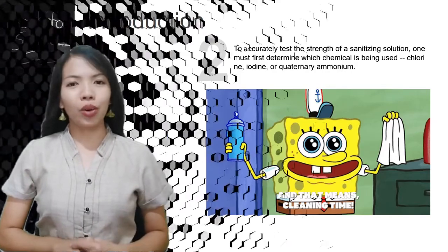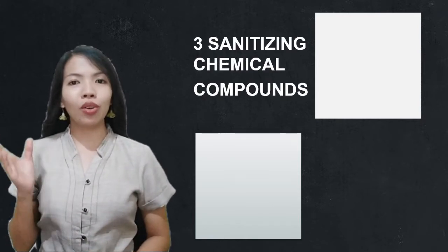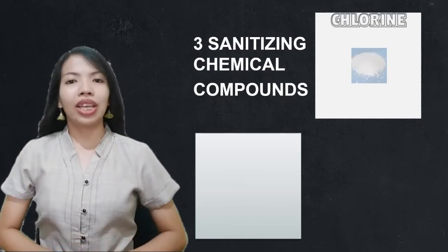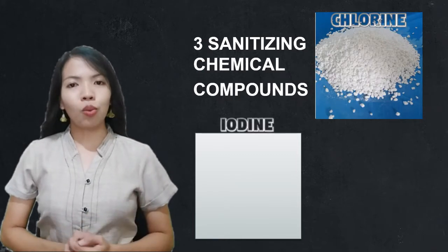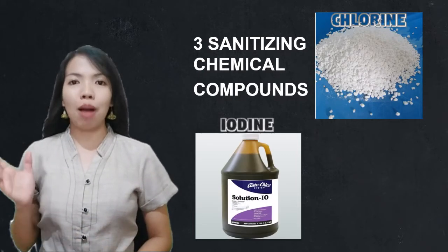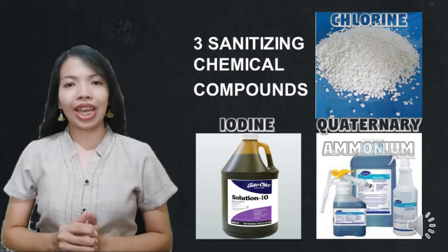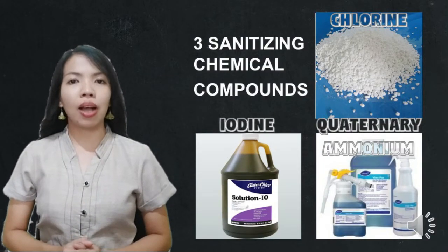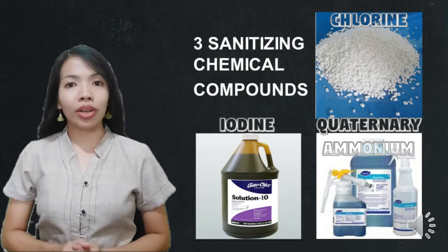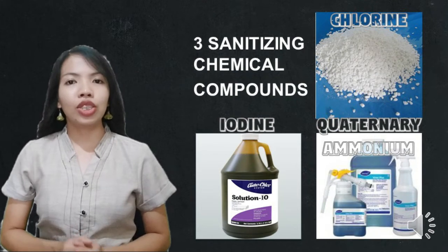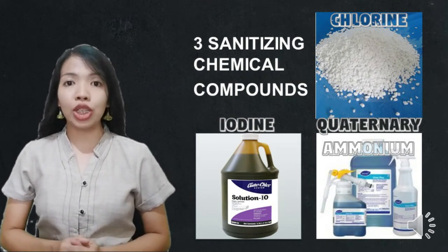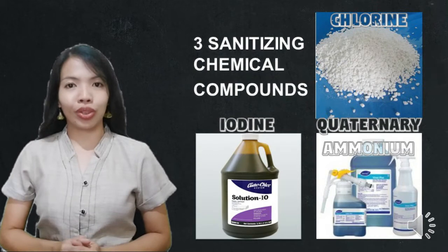We are going to discuss the three chemical compounds used as sanitizers: chlorine, iodine, and quaternary ammonia. These three chemical sanitizers are measured in parts per million, or PPM, which measures the concentration level of the sanitizer in water.